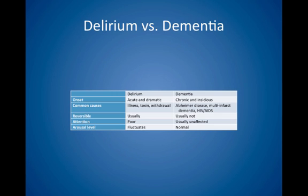This table compares and contrasts delirium and dementia. For onset, delirium is acute and dramatic, while dementia is chronic and insidious. Common causes of delirium include illness, toxins, and withdrawal. Common causes of dementia include Alzheimer disease, multi-infarct dementia, and less commonly HIV and AIDS. Delirium is usually reversible; dementia is usually not reversible. Attention is poor in delirium but usually unaffected in dementia — a major distinguishing point. Arousal level fluctuates in delirium but is normal in dementia, another major distinguishing characteristic.